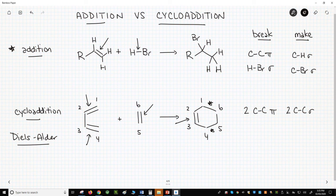So yes, we've had a net loss of pi bonds and a gain of sigma bonds. It's definitely an addition. Furthermore, we've made a new ring. This isn't just any addition. It's specifically a cycloaddition.